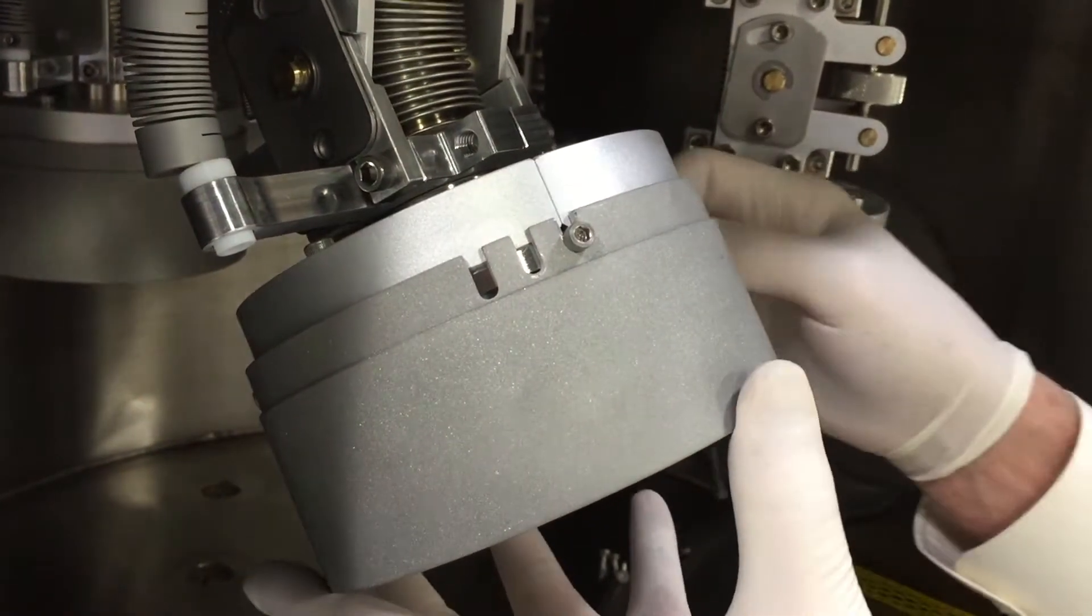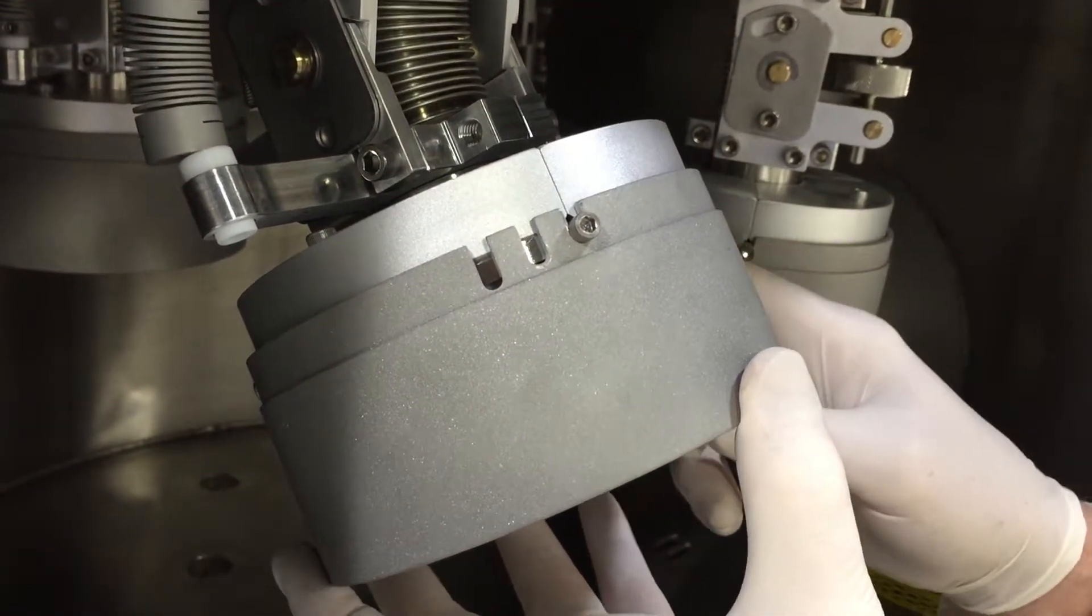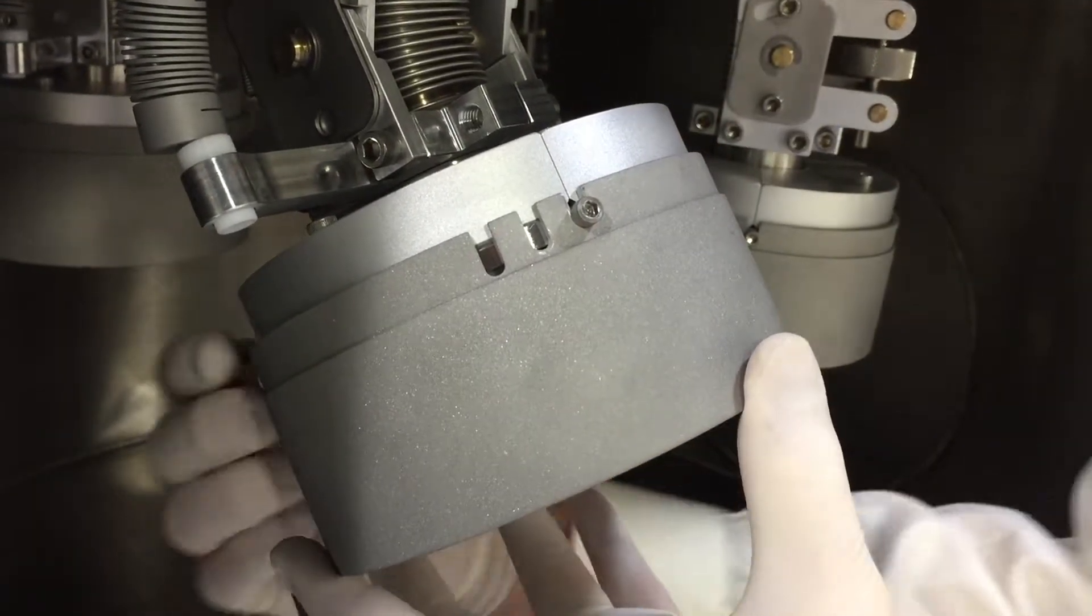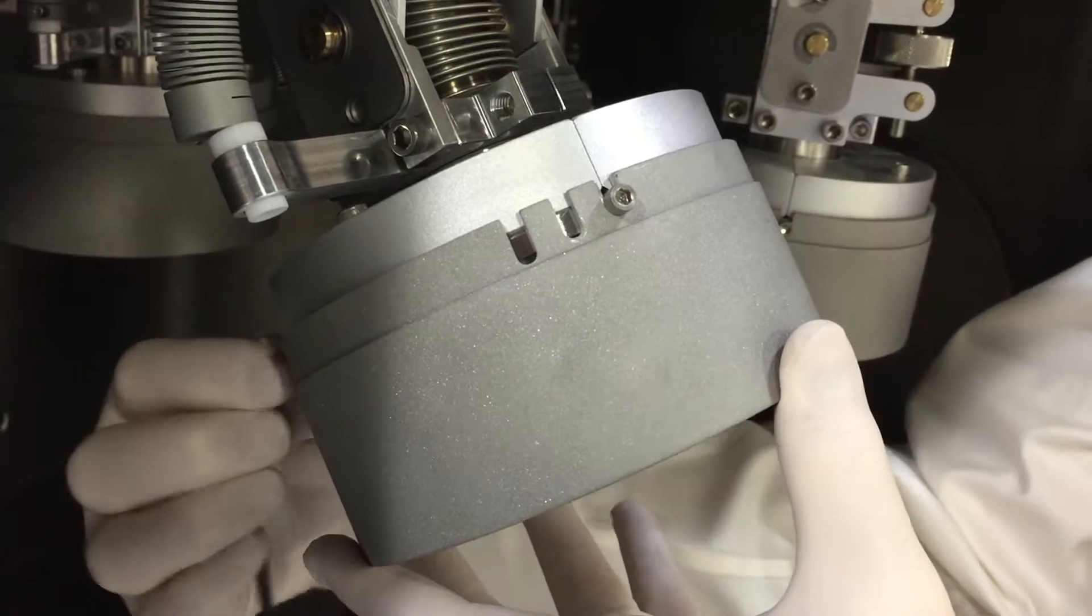Changing a Denton Vacuum Cathode in a Discovery sputtering system is a trivial process. Loosen the three set screws holding the outer target shroud assembly.